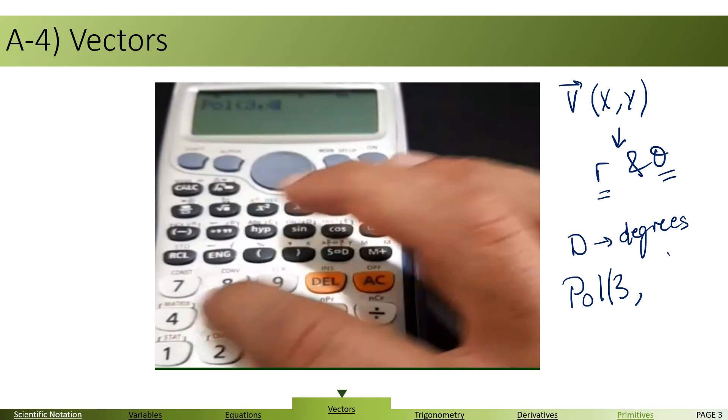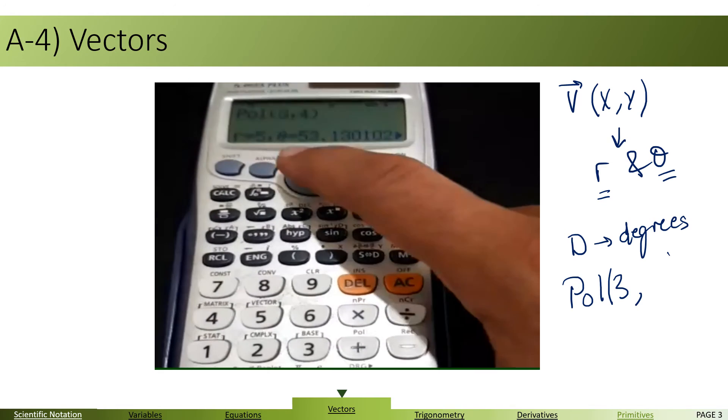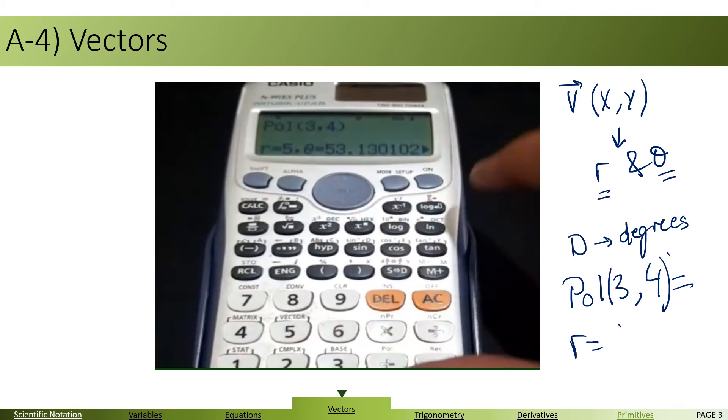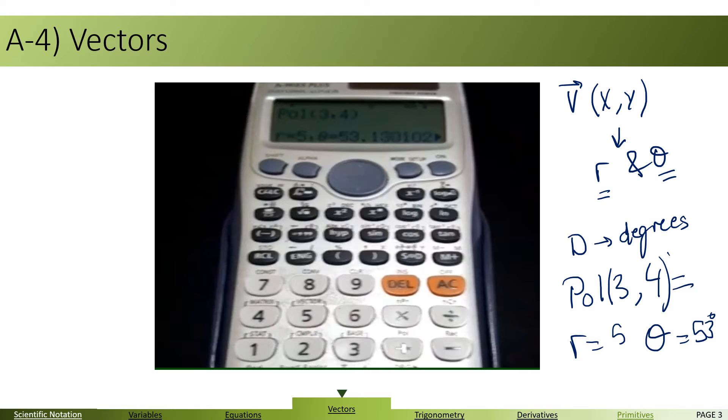Press shift, then the comma, and we have 3, 4. Once we write the equal, it gives us that R is 5, and theta is 53 degrees, because we have chosen degree. And that's it.